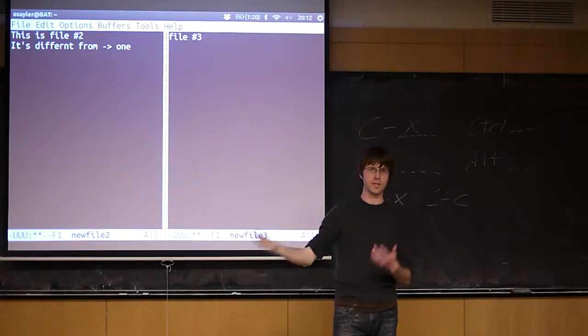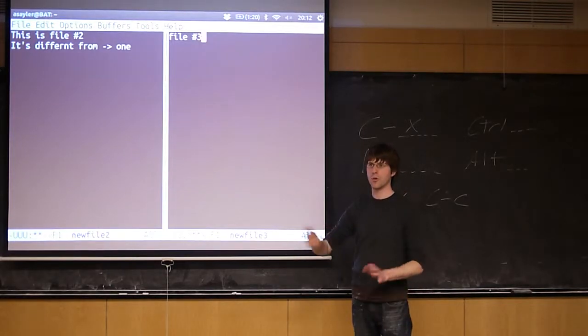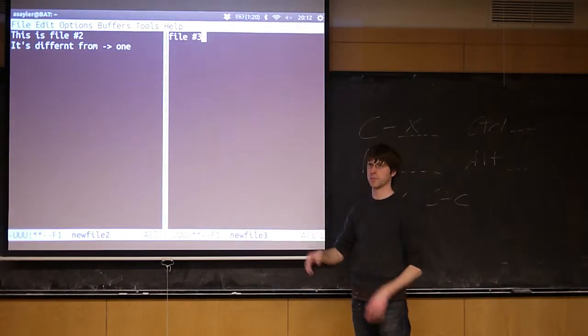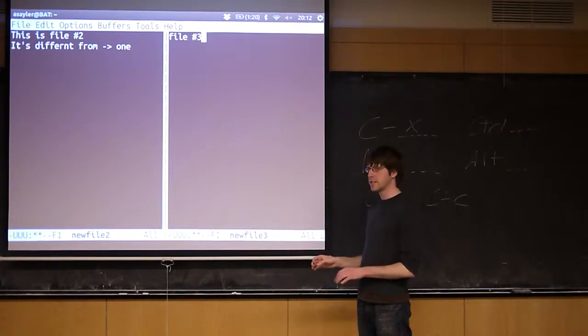Left and right arrow keys work great if you have a small enough number of buffers that you can get to them quickly. If you have tens of files open, maybe you don't want to cycle through all of them. Then you can do Control-X B, type in the name of the file you want, and it'll open it.